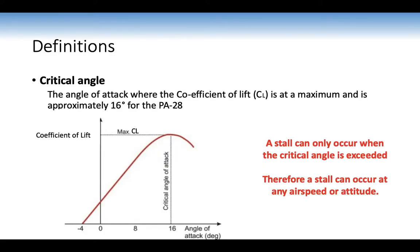The critical angle is the angle of attack where the coefficient of lift (Cl) is at a maximum, and it is approximately 16 degrees for the PA28 — and for most GA aeroplanes as well. Looking at the lift curve for a cambered aeroplane, it's very good at producing lift, even producing lift at negative 4 degrees angle of attack. When the aeroplane reaches past 16 degrees, it stalls as less lift is generated to balance out weight, and we have a lot of drag.